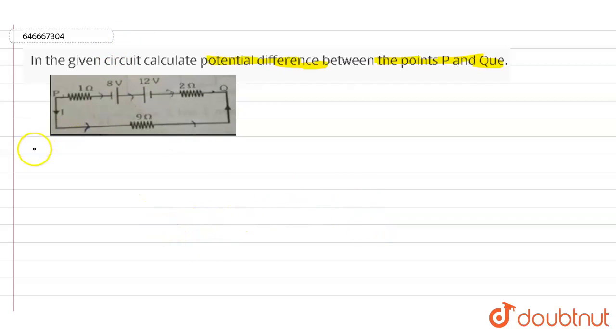According to that, net resistance, if you look into this particular figure, in this figure we have the resistors like 1 ohm, 2 ohm, and 9 ohms which are parallel to each other and having the voltage sources too, which are 8 volts and 12 volts.